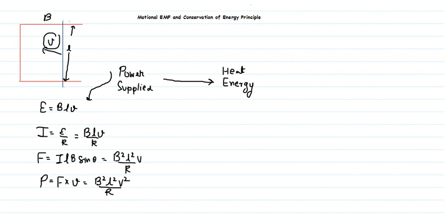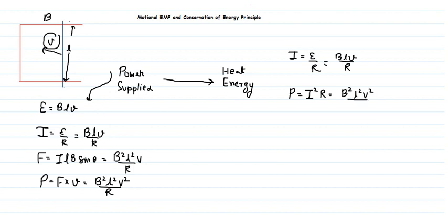Let's calculate how much heat energy is produced. The current in the circuit is I = E/R = BLV/R. The power dissipated is given by I²R, and substituting the value of I gives B²L²V²/R. This is our power produced.